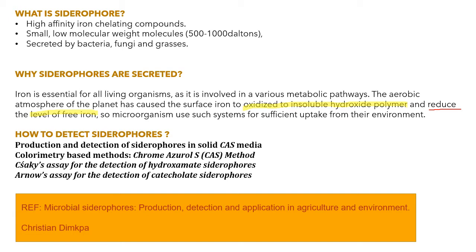That is the reason why bacteria, fungi, or grasses produce and secrete siderophores into their nearby environment. If you have a soil sample — say for a project or practical exam — and you want to find out whether bacteria or fungi are producing siderophores, you need to know some detection methods. Today we discuss four such methods; solid CAS medium is the widely used qualitative method, while the other three are quantitative.